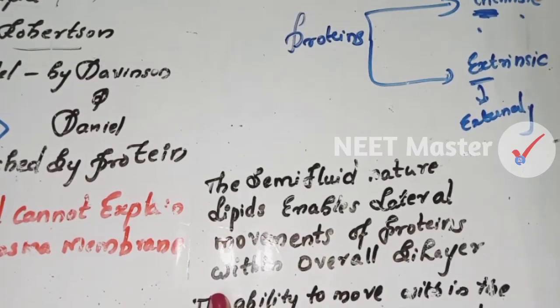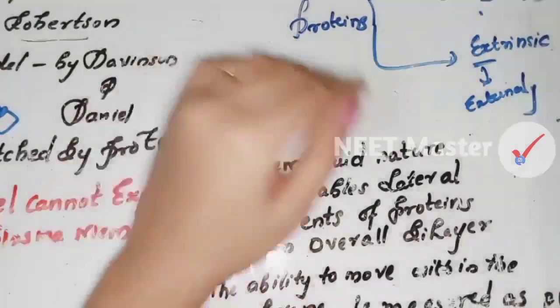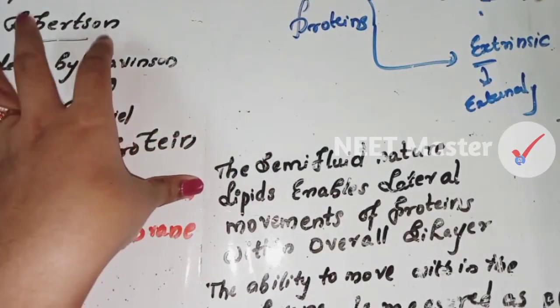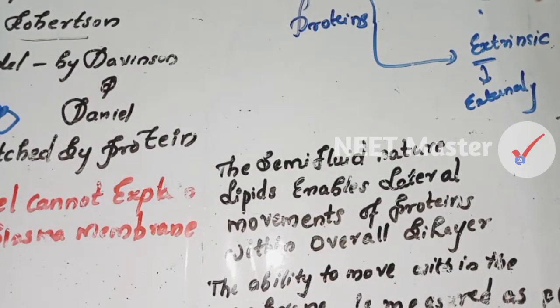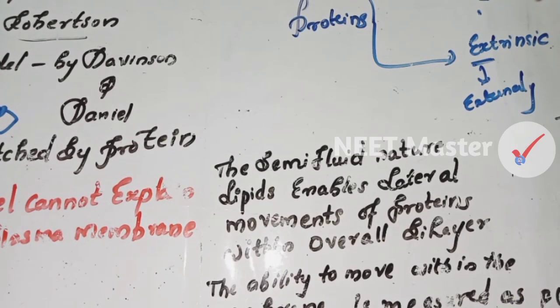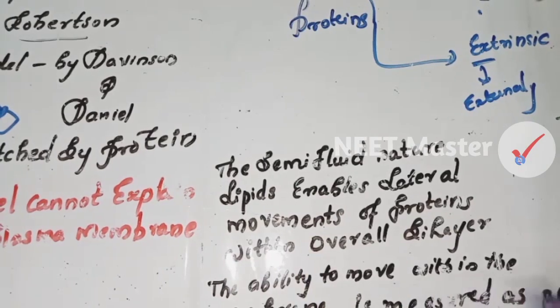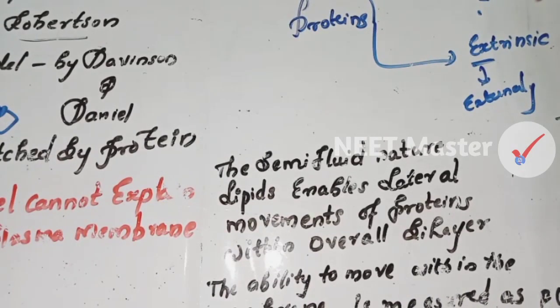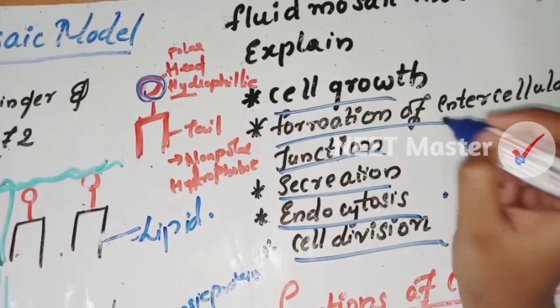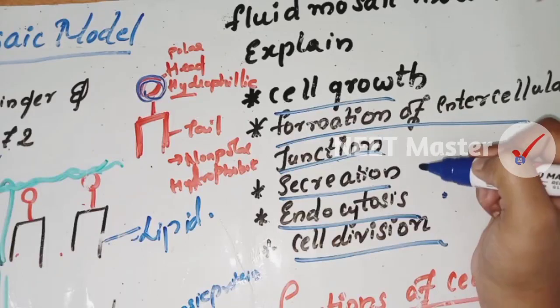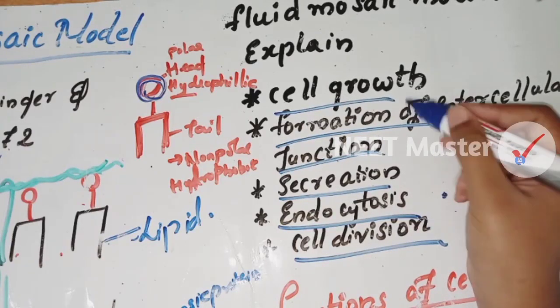The semi-fluid nature of lipids enables the lateral movement of proteins within the membrane. The ability to move within the membrane is measured as fluidity. The fluid mosaic model can explain cell growth, formation of intercellular junctions, secretion, endocytosis, and cell division.